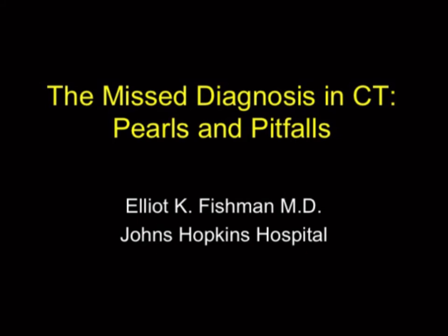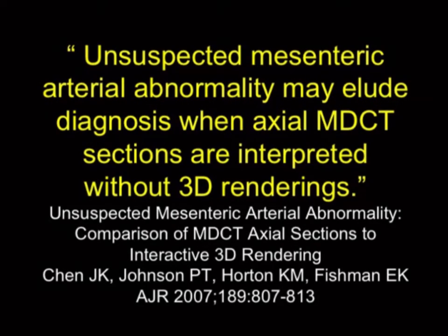Hi, this is Eli Fishman, and welcome to part four of Miss Diagnoses. I left off before talking about mesenteric abnormalities, and I think this is one of the most common areas where misses occur — often critical misses where you don't get a second chance. This refers to things involving the celiac axis, the SMA, branches off the mesenteric vessels, and even the renal arteries, but I'm really going to focus on the celiac and SMA.